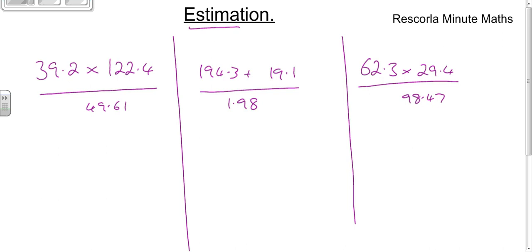The key to this video is the fact that it says estimation. If it says estimate or approximate, you get zero marks if you answer the question as it looks. What you've got to do — step one — if it says estimate or approximate, you've got to round everything. The first number is in the tens, so you round to the nearest 10, which gives you 40.